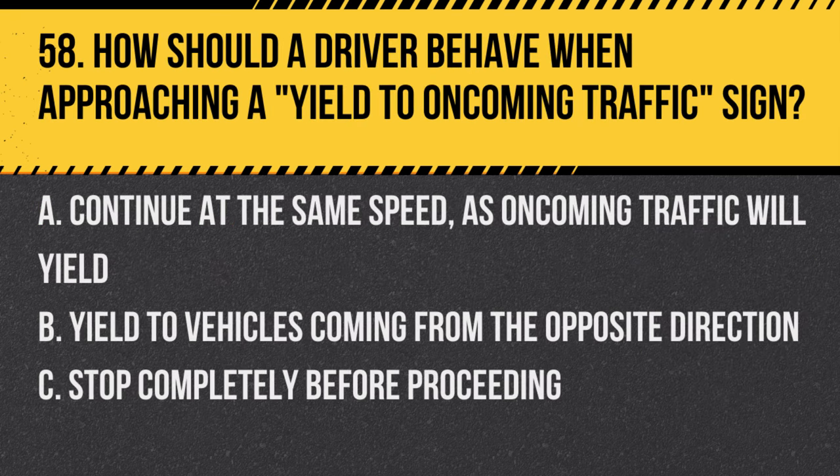Question 58. How should a driver behave when approaching a yield to oncoming traffic sign? A. Continue at the same speed, as oncoming traffic will yield. B. Yield to vehicles coming from the opposite direction. C. Stop completely before proceeding. Answer: B. Yield to vehicles coming from the opposite direction. This sign indicates that you should give way to oncoming traffic.